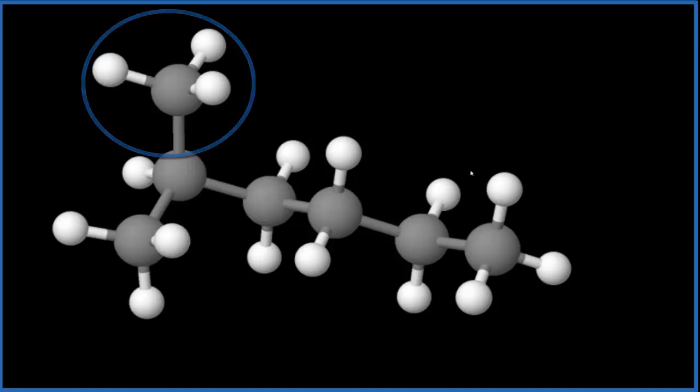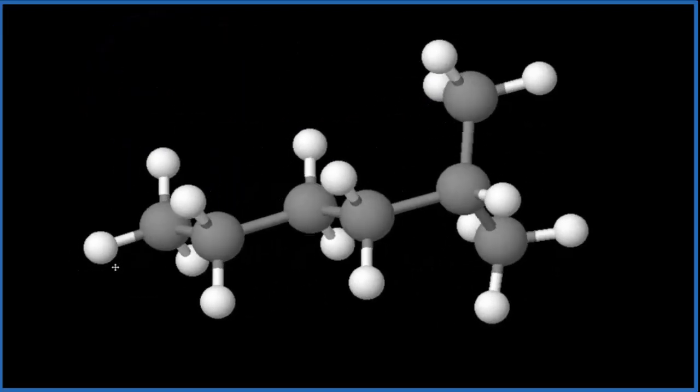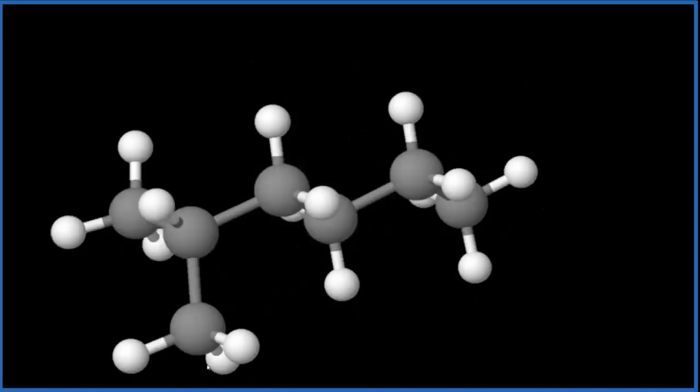You can see if we had the carbon over here, the methyl group over here, it would still be 2-methylhexane. We have 1, 2, there's that methyl group, 3, 4, 5, 6. So either way works. And it's still 2-methylhexane if we turn it upside down.